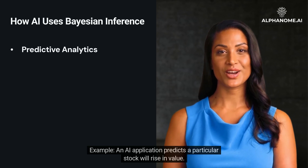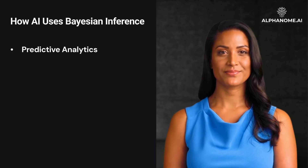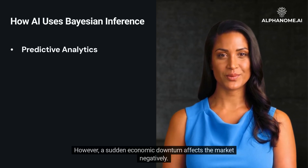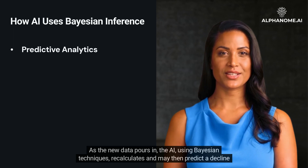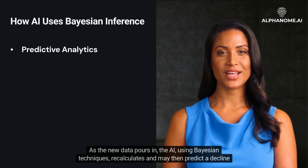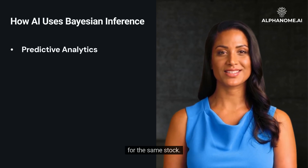For example, an AI application predicts a particular stock will rise in value. However, a sudden economic downturn affects the market negatively. As the new data pours in, the AI, using Bayesian techniques, recalculates and may then predict a decline for the same stock.